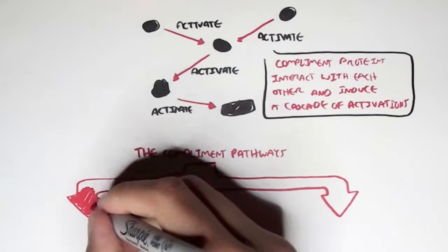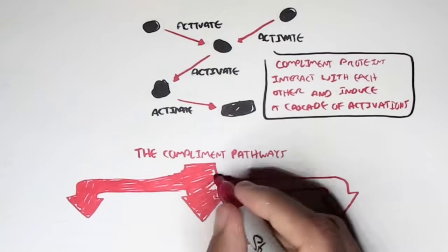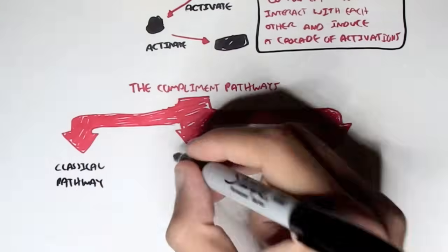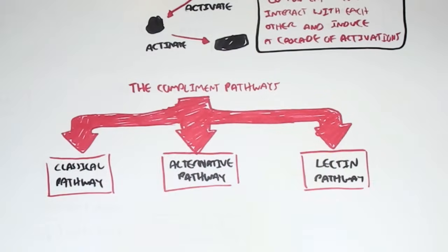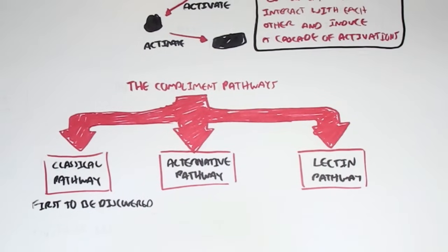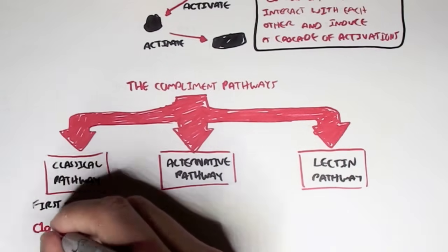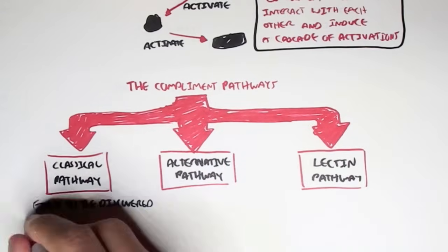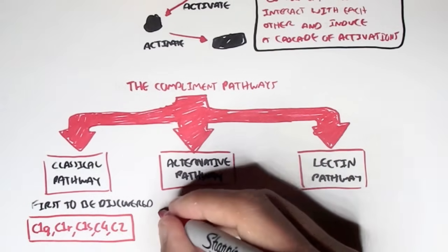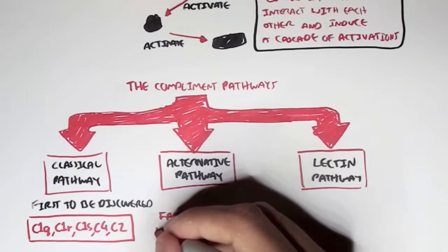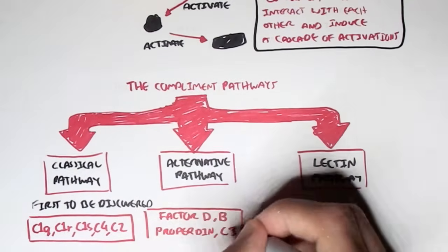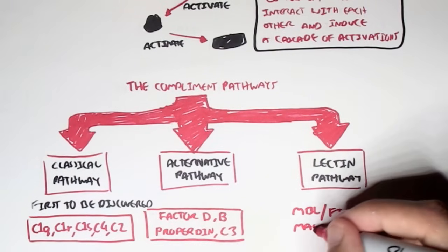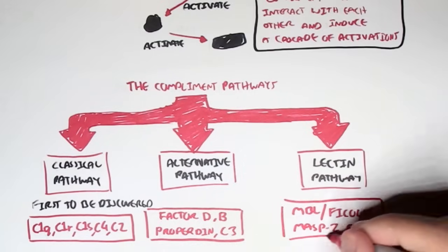There are many complement pathways because there are many ways complement proteins can activate each other. These complement pathways are the classical pathway, the alternative pathway, and the lectin pathway — the classical pathway being the first to be discovered. The proteins involved in the classical pathway are C1Q, C1R, C1S, C4, and C2. In the alternative pathway, we have Factor D, Factor B, Properdin, and C3. For the lectin pathway, we have MBL (mannose binding lectin), Ficolin, MASP2, C4, and C2.